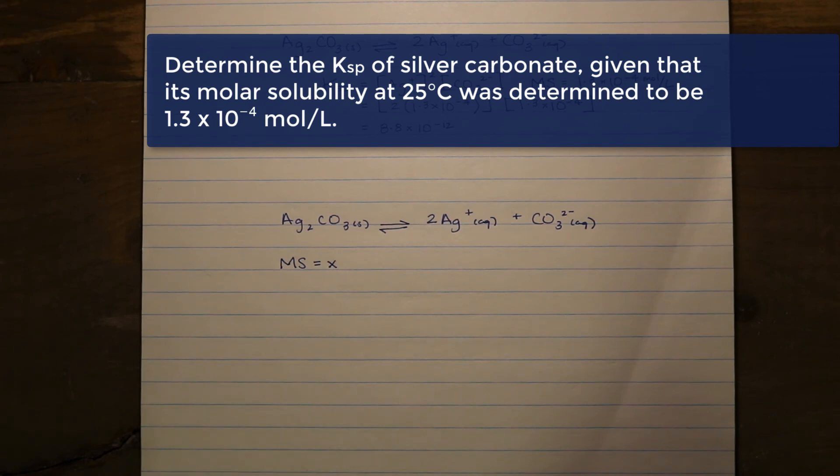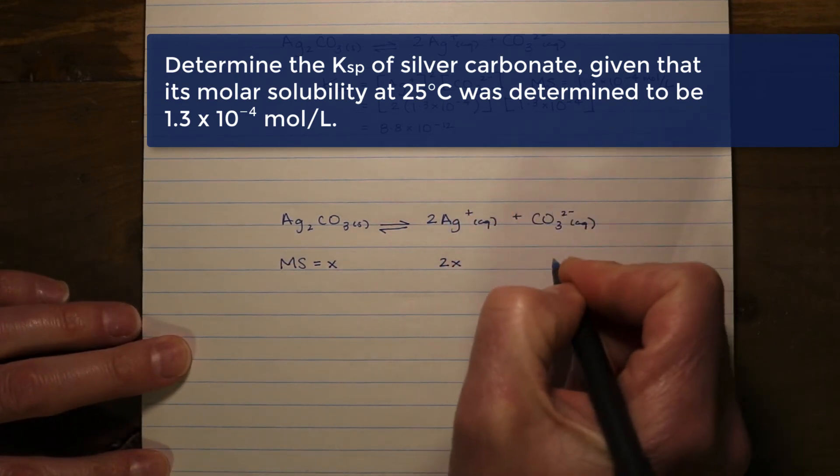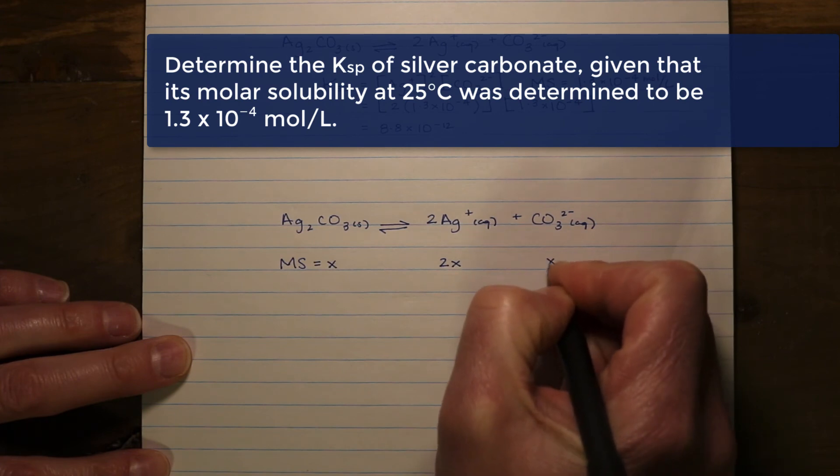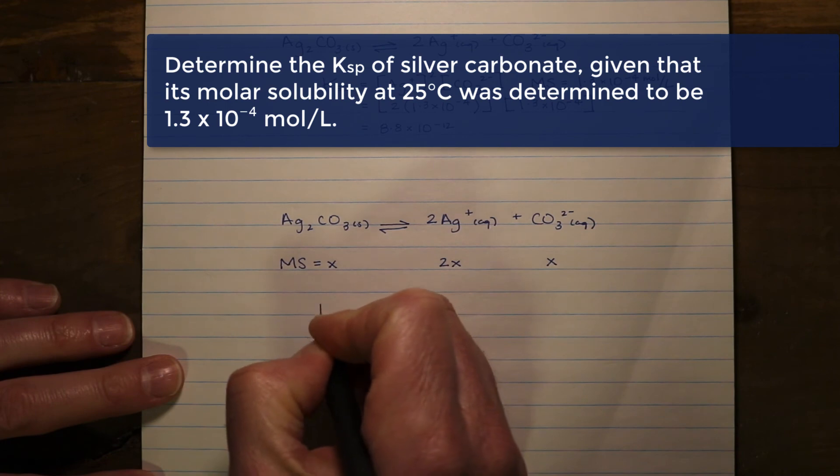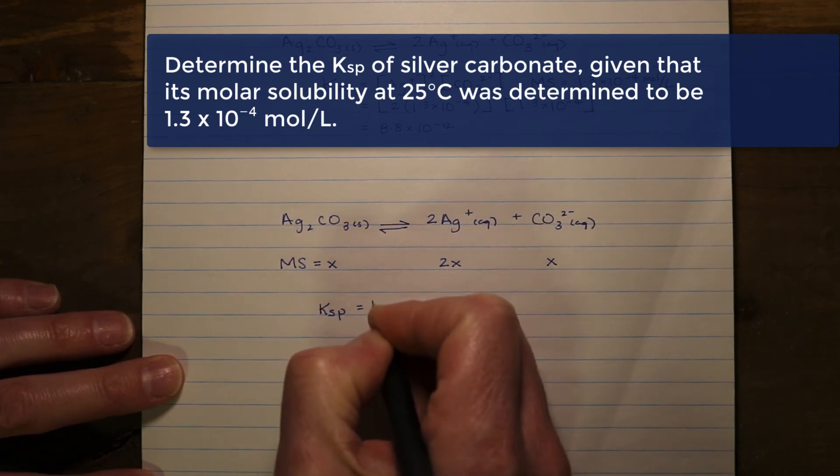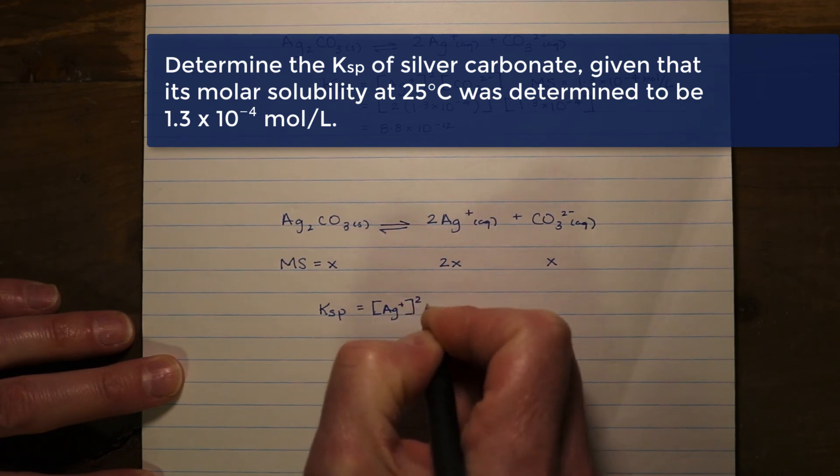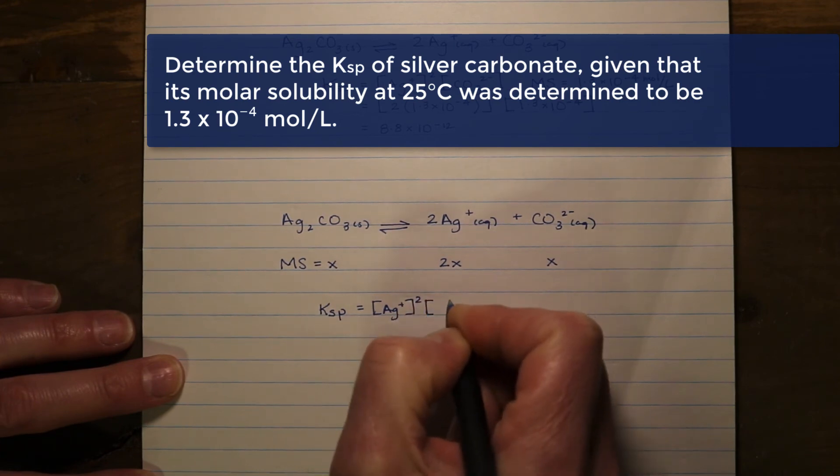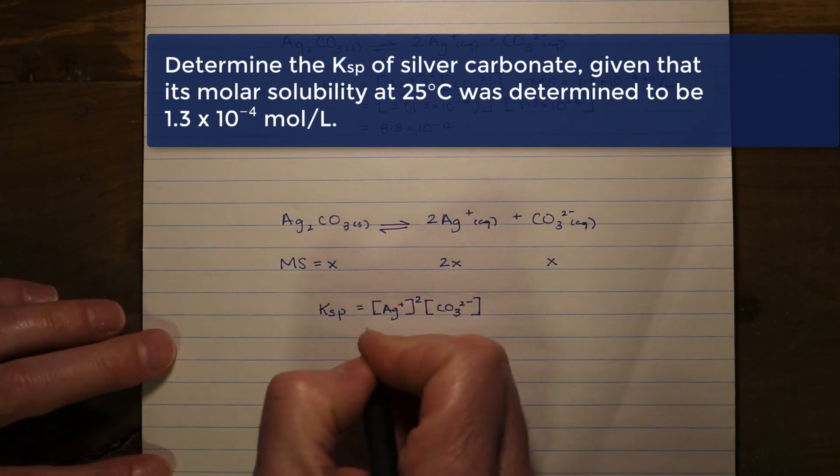We know what the molar solubility is, so in fact we know what X is, but we will utilize that later as we fill it in. We understand that our concentration at equilibrium is going to be 2X for the silver ion and only 1X for the carbonate ion, again because of that 2 to 1 ratio that these two things dissociate in. Our Ksp expression is unchanged: the concentration of the silver ion raised to the exponent 2, representing the coefficient 2 from the balanced chemical equation, multiplied by the concentration of the carbonate ion.